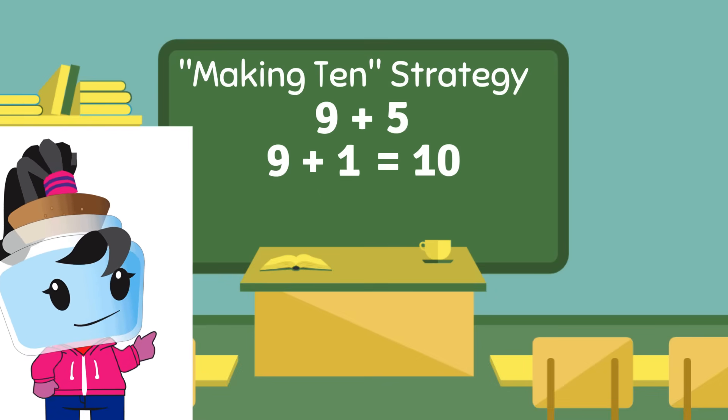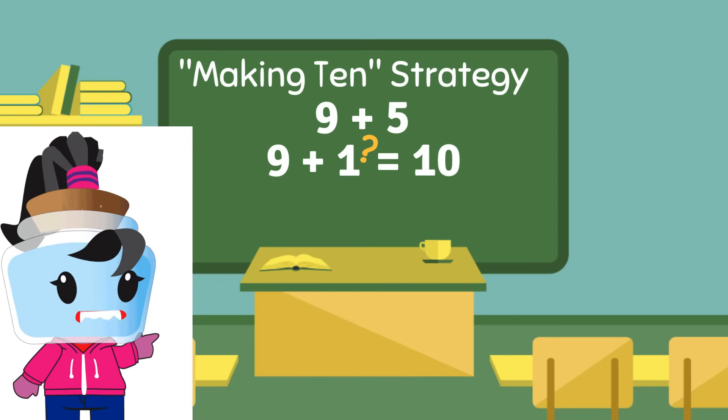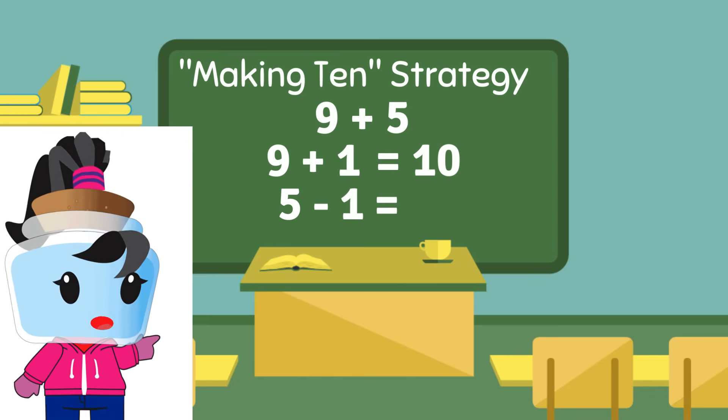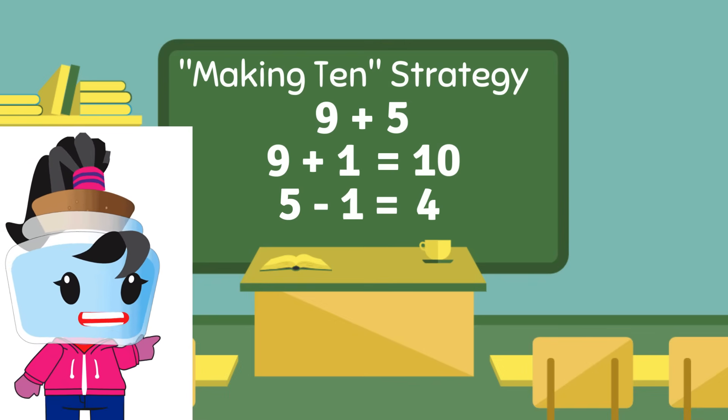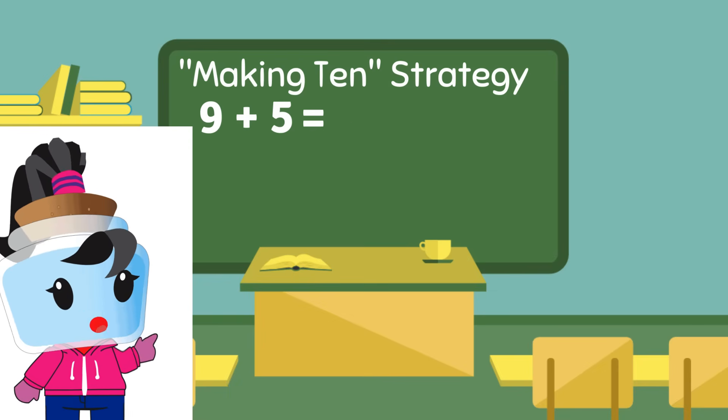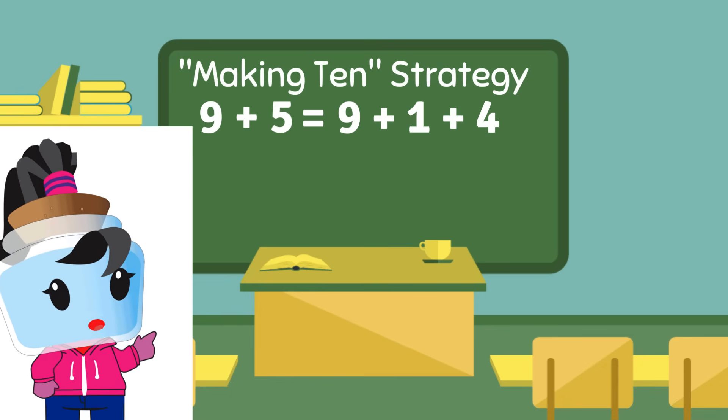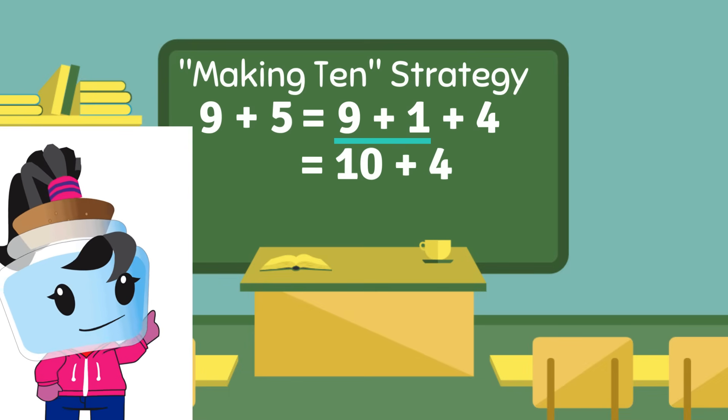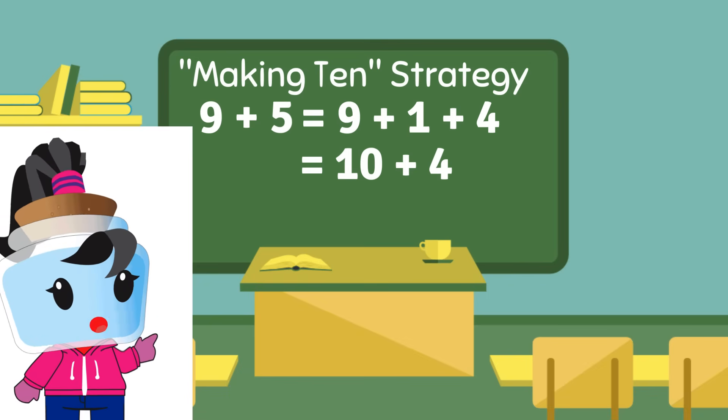But where do we get the 1 from? That's right, from the 5. So if we take 1 from 5, we'll be left with 4. Now we can rewrite the addition statement as 9 plus 1 plus 4. Then adding 9 plus 1, we'll have 10 plus 4.